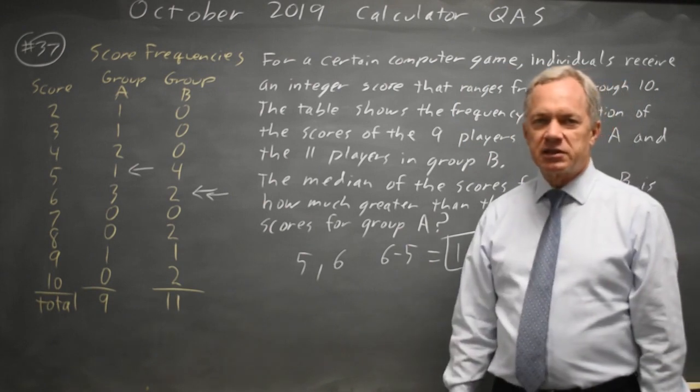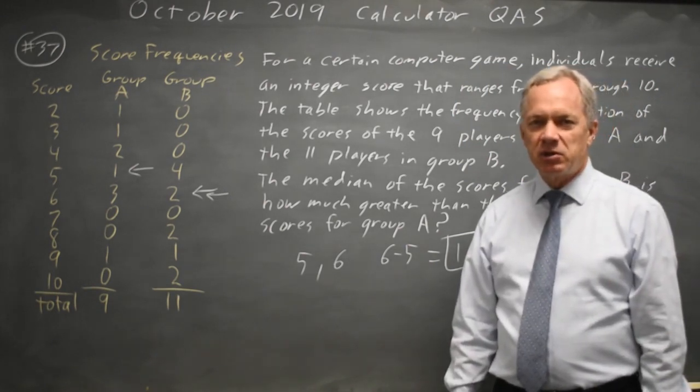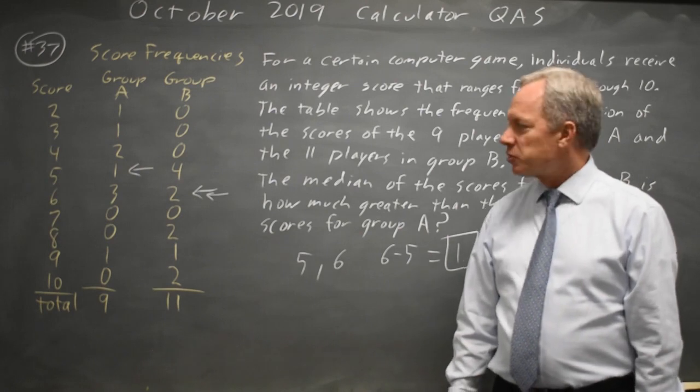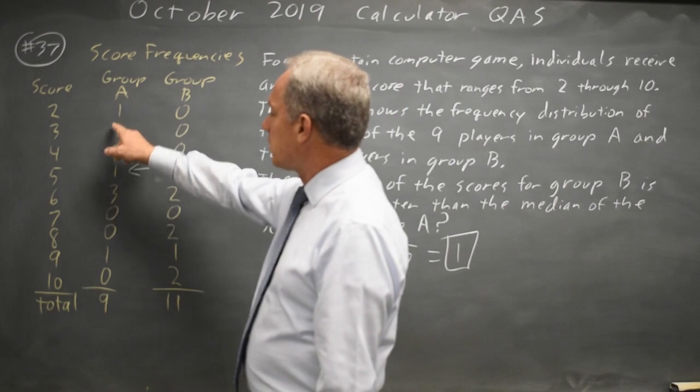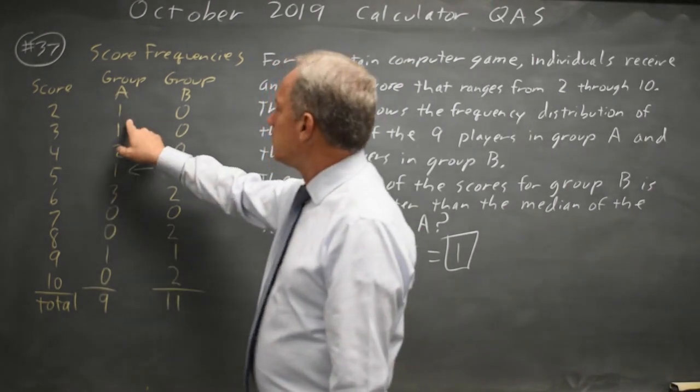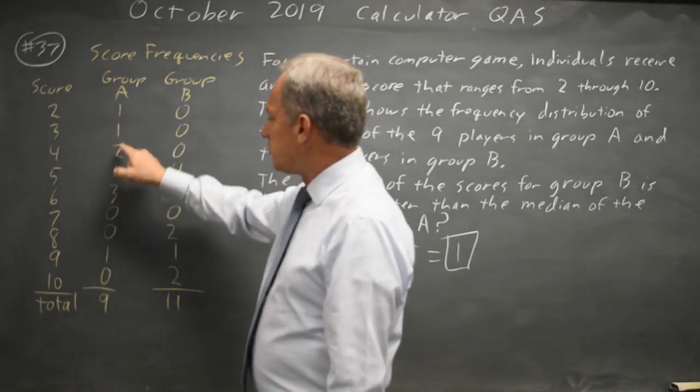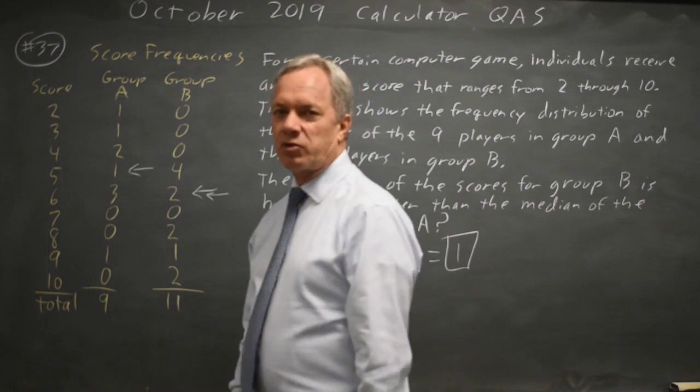The trick here, of course, is understanding how to read the frequency distribution and remembering that the median is the middle number when they're sorted smallest to largest. You're not looking for the median of the entries in the column for group A.